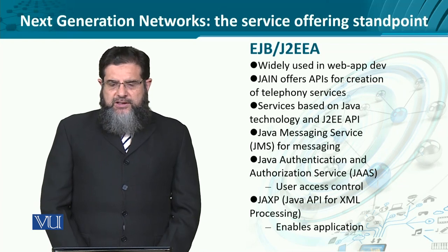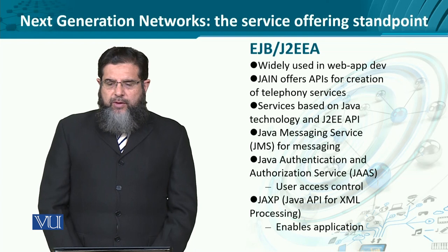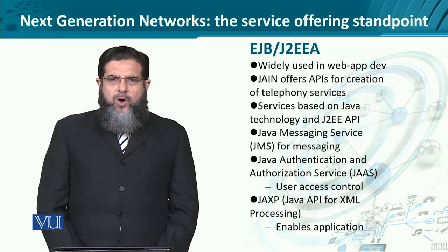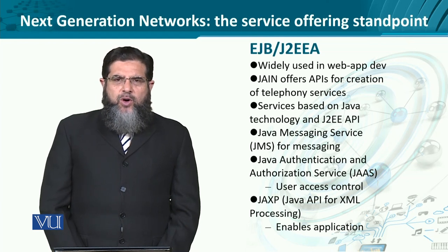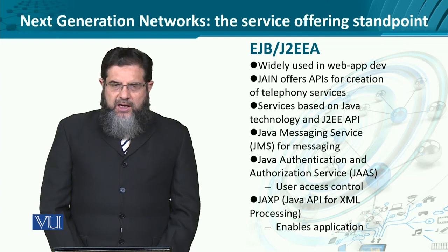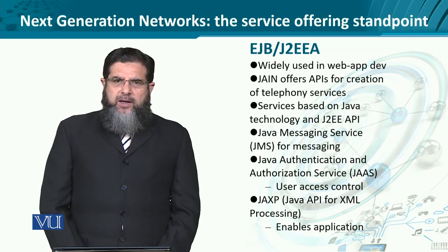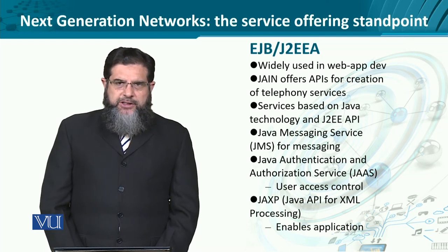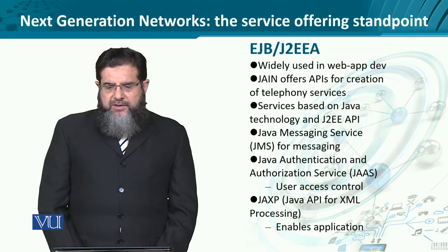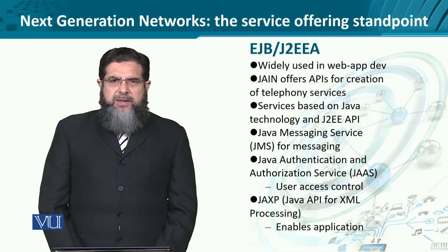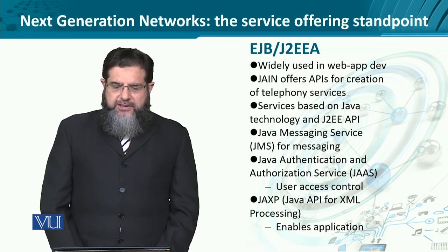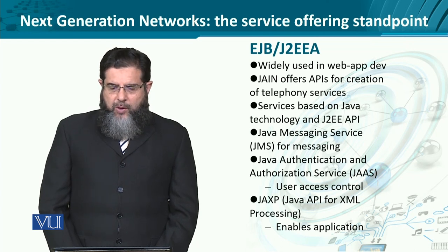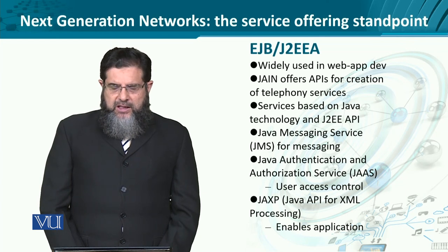Then we have Java-based technologies, which are widely used in web application development. Java for Integrated Networks or Intelligent Networks offers APIs for creation of various telephony services, including call creation, call establishment, call termination, call receiving, redirection, voicemail, etc. These services are based on Java with specific libraries. For example, we have Java Messaging Service for SMS, MMS, and IVR — interactive voice response. Then we have Java Authentication and Authorization Service that provides AAA.